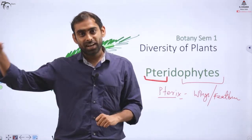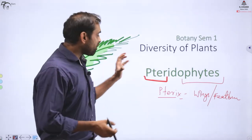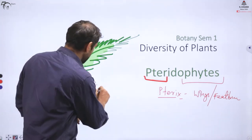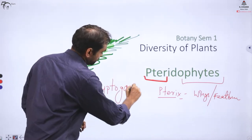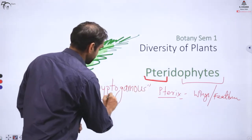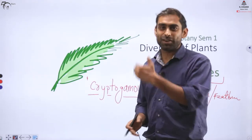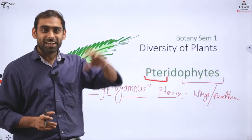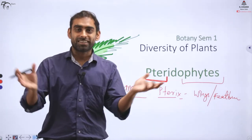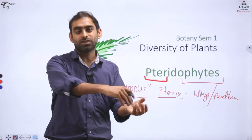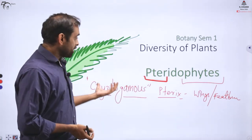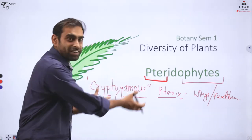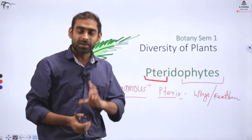Pteridophytes can be considered a connecting link between bryophytes and modern-day plants, just as bryophytes were the connecting link between algae and pteridophytes. They also have another general term — they are called cryptogamous. 'Crypto' means hidden and 'gamos' means marriage, so their reproduction is not visible, unlike higher plants where flowering is apparent.